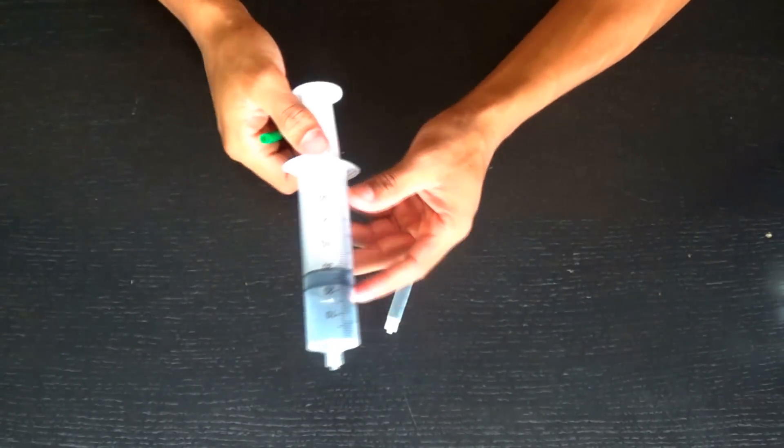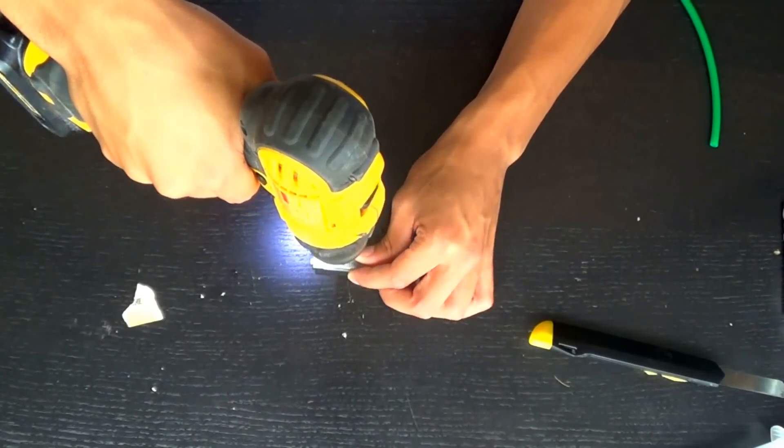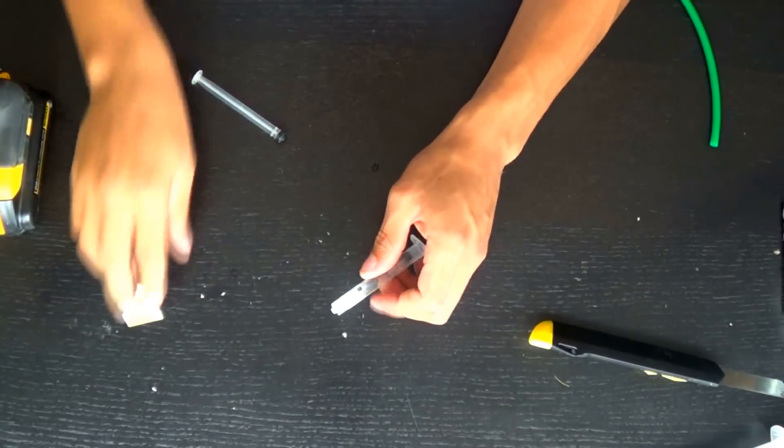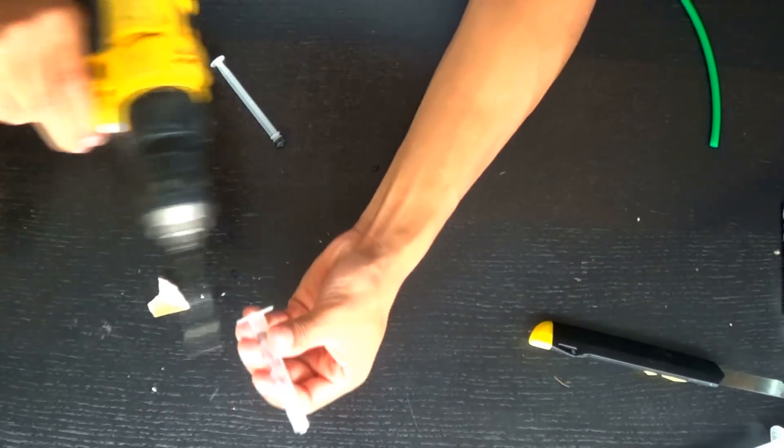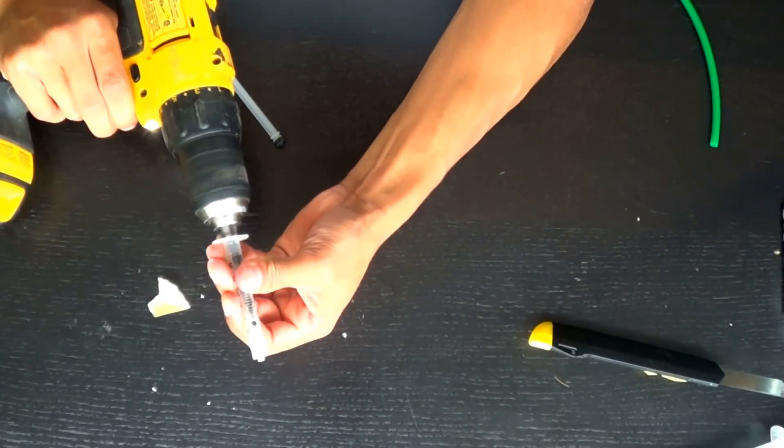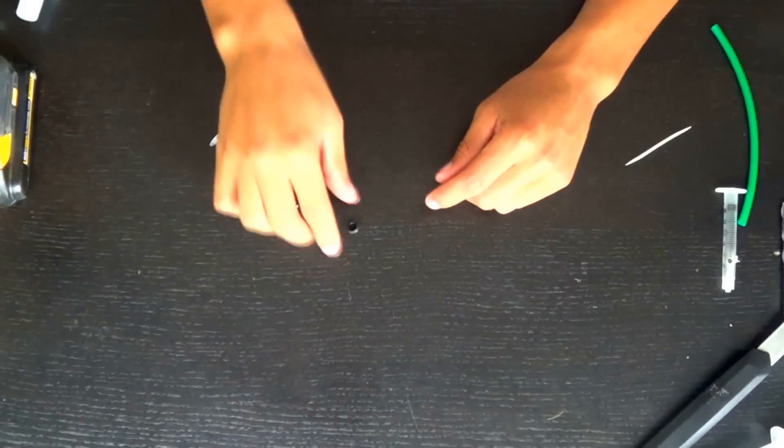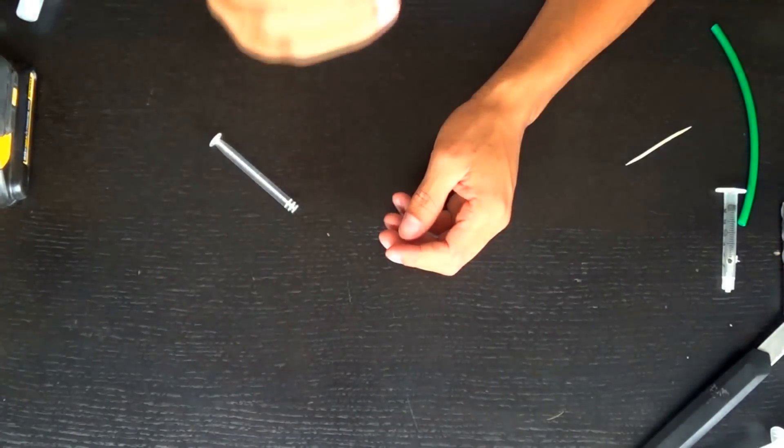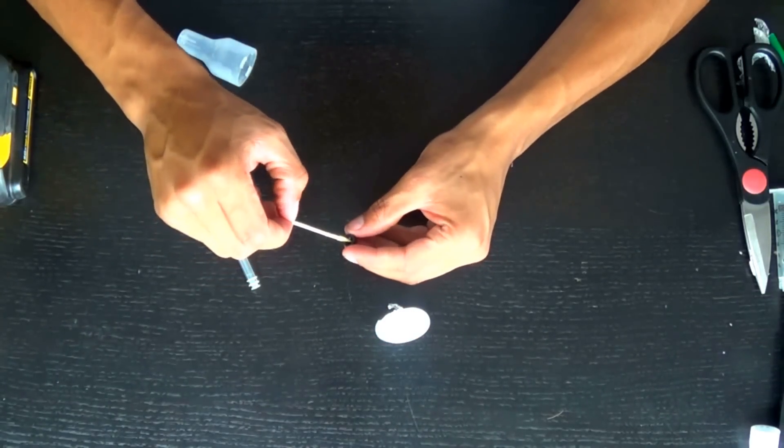So to start off we're going to need a couple syringes, a small one and a big one. I start off by drilling a hole in the small syringe. Now the small syringe is actually going to be used basically as a pressure valve so when it builds up to a certain amount of pressure it releases and the gun fires.